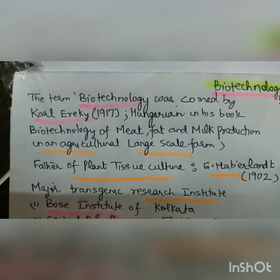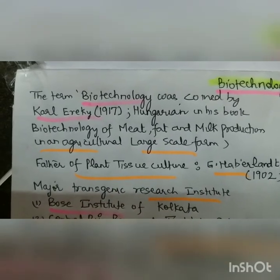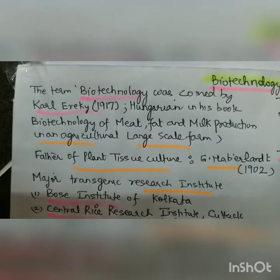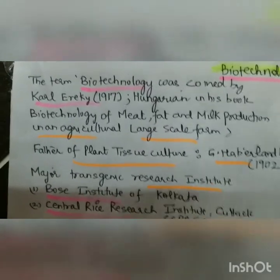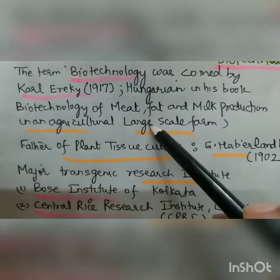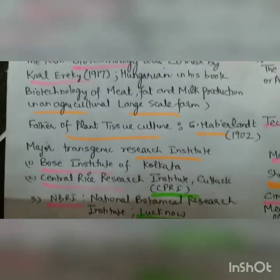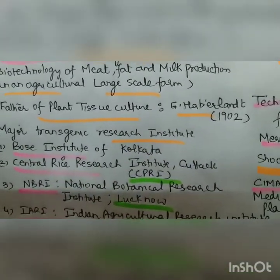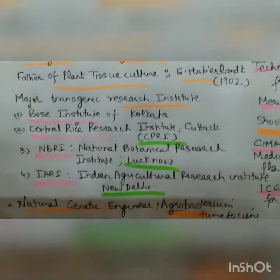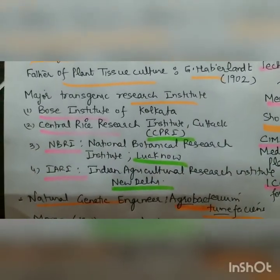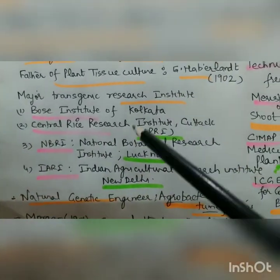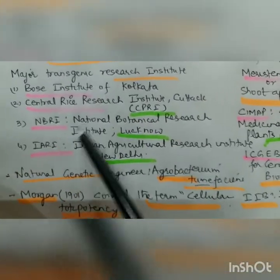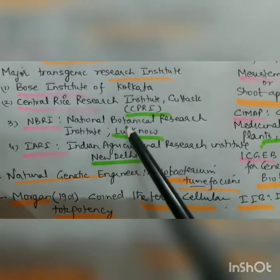Biotechnology is a term coined by Karl Ereky in 1919. He was Hungarian and used it in his book on biotechnology of meat, fat, milk production and large-scale agriculture. The father of plant biotechnology is G. Haberlandt, 1902. Major transgenic research institutes include the Bose Institute of Kolkata, Central Rice Institute Cuttack, CPRI, NBRI — in IFS this question will come, so expand these abbreviations.